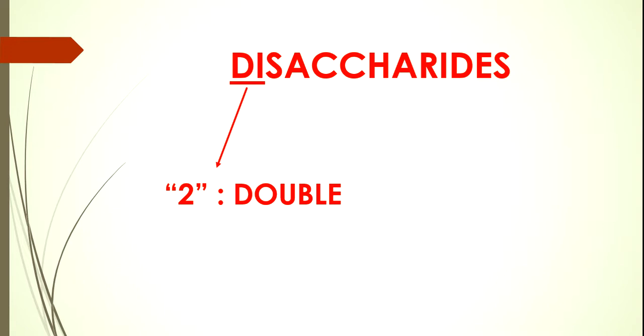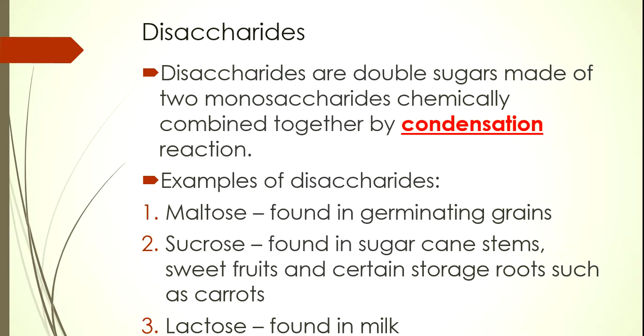So what is a disaccharide? A disaccharide is a double sugar made of two monosaccharides chemically combined together by a condensation reaction.